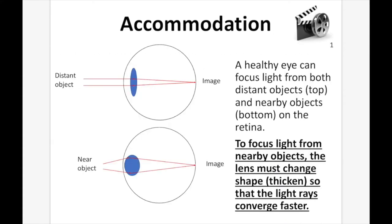Accommodation: a healthy eye can focus light from both distant and nearby objects on the retina. To focus light from nearby objects, the lens must change its shape and thicken so that the light rays converge faster. From a nearby object, light rays are spreading out at an angle, so the lens needs to work harder to bring those rays together right at the retina.